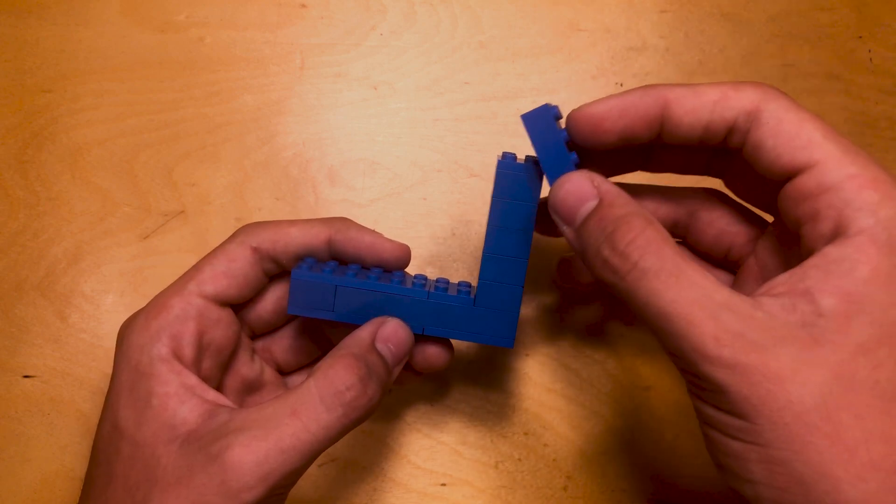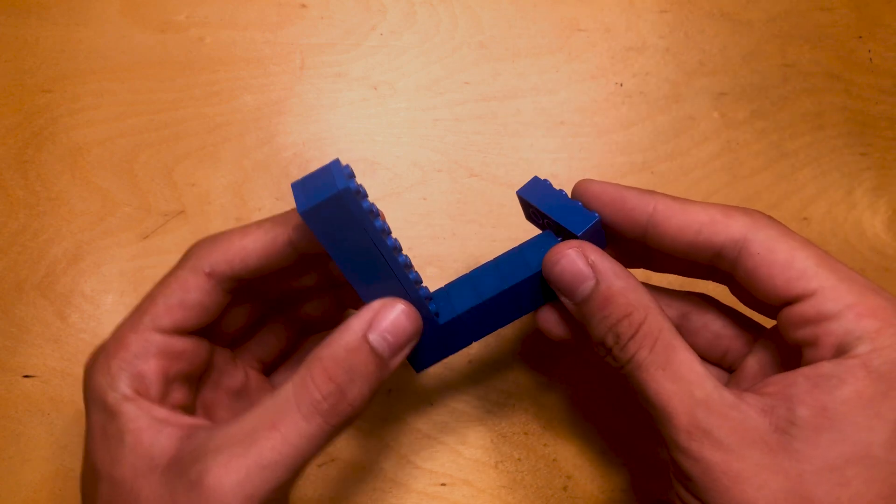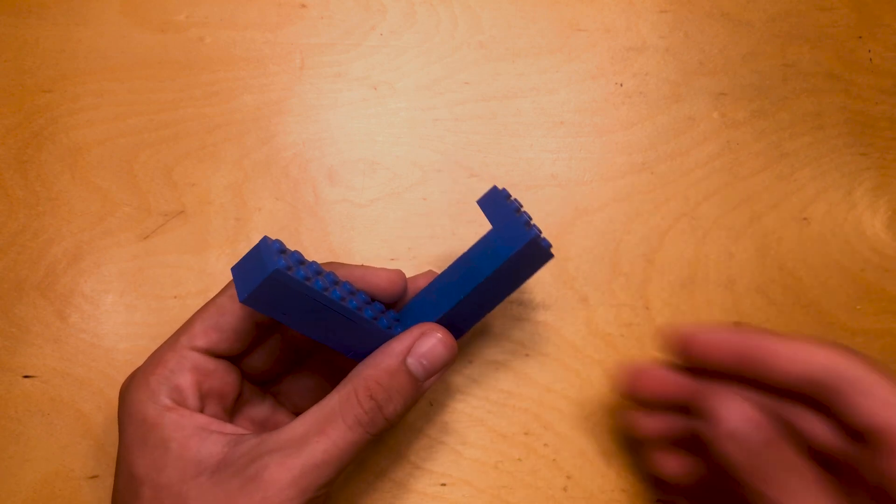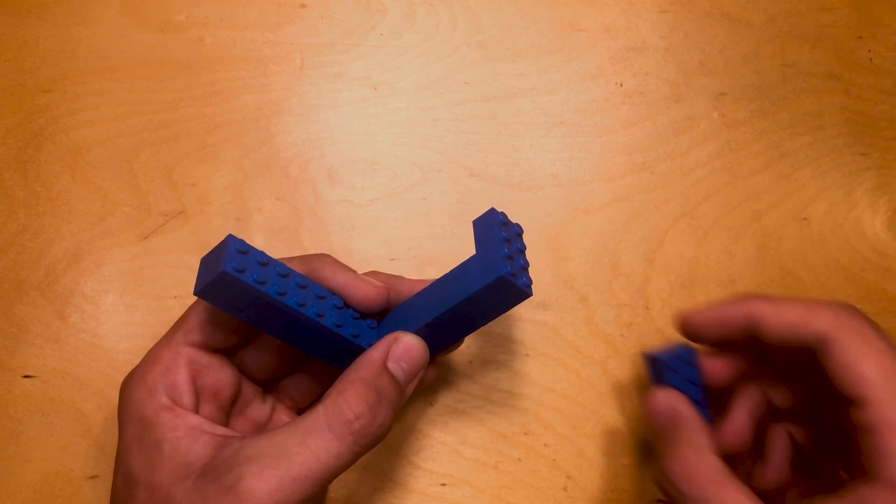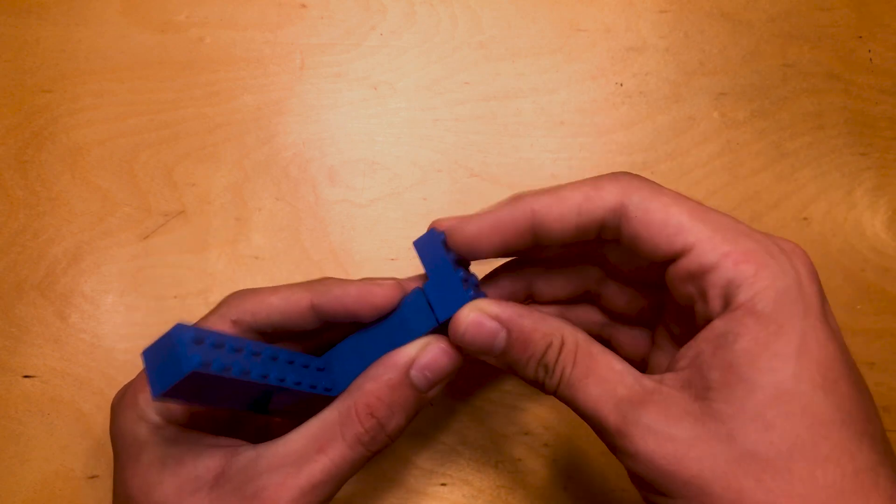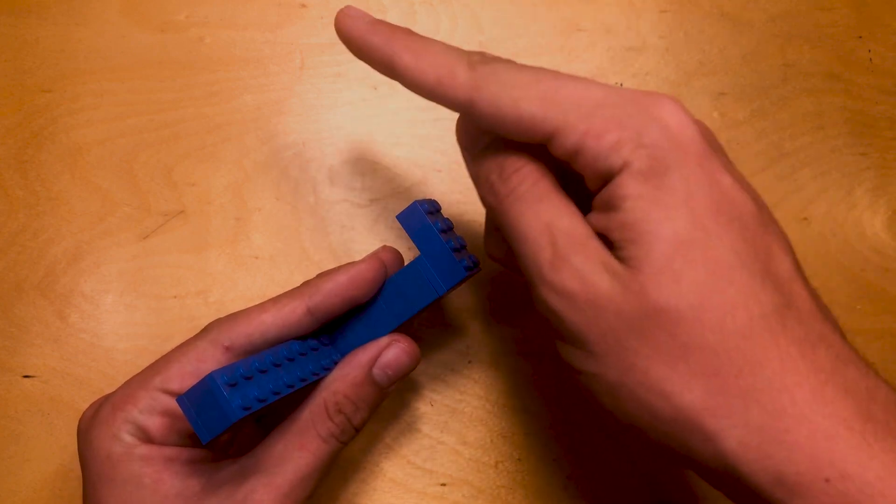Now take one of your 2x4s and what we're going to do is put it this way. It actually doesn't matter which way you put it, it just depends which angle you have to look at it if you want to stick your top side this way or this way.